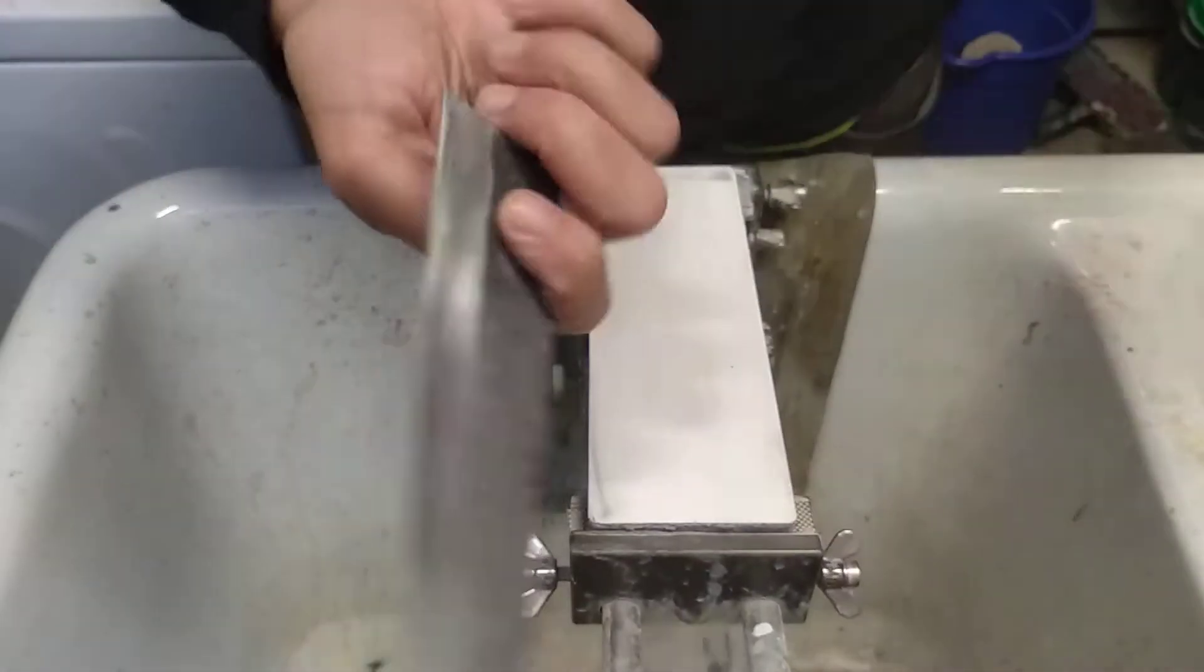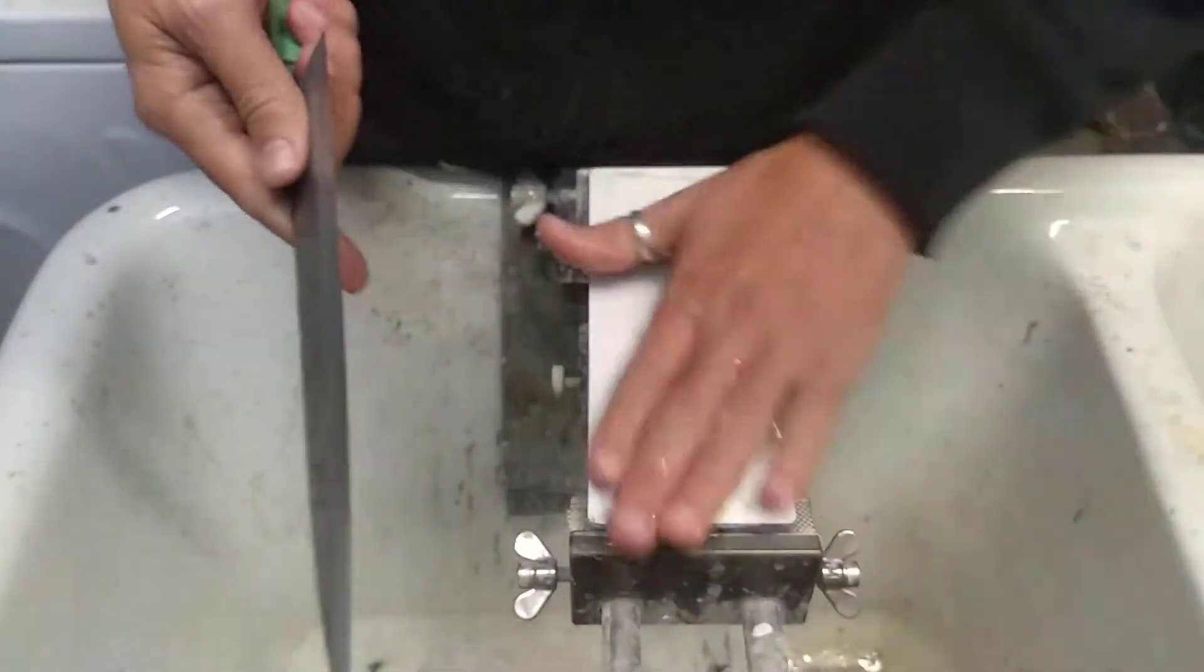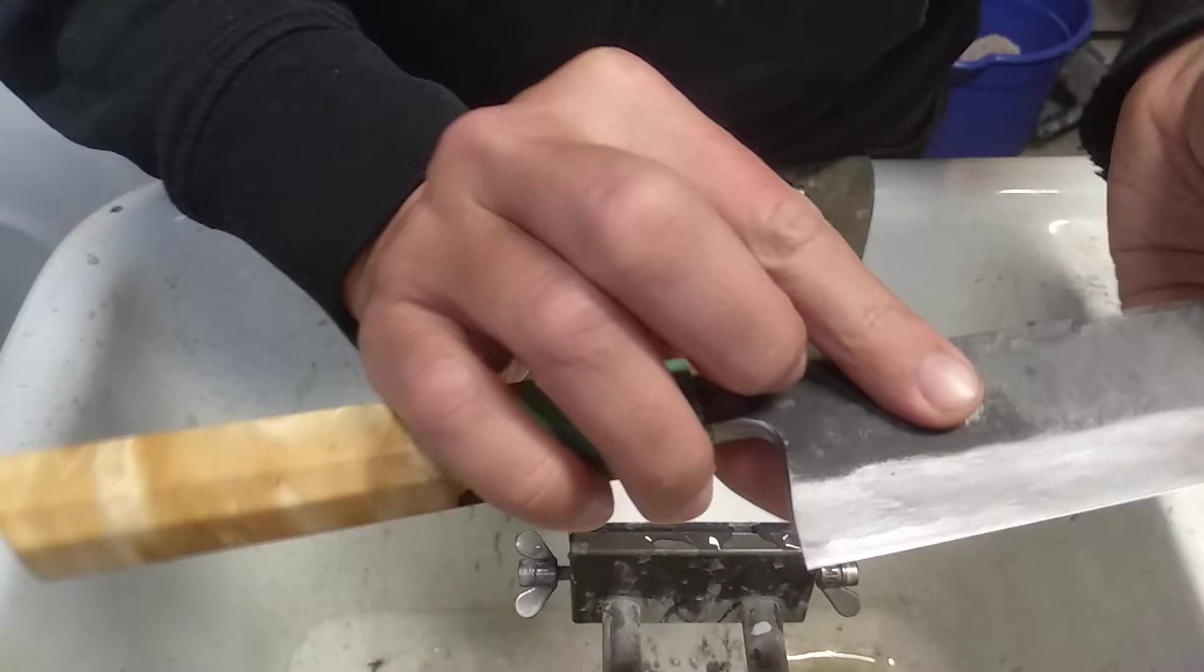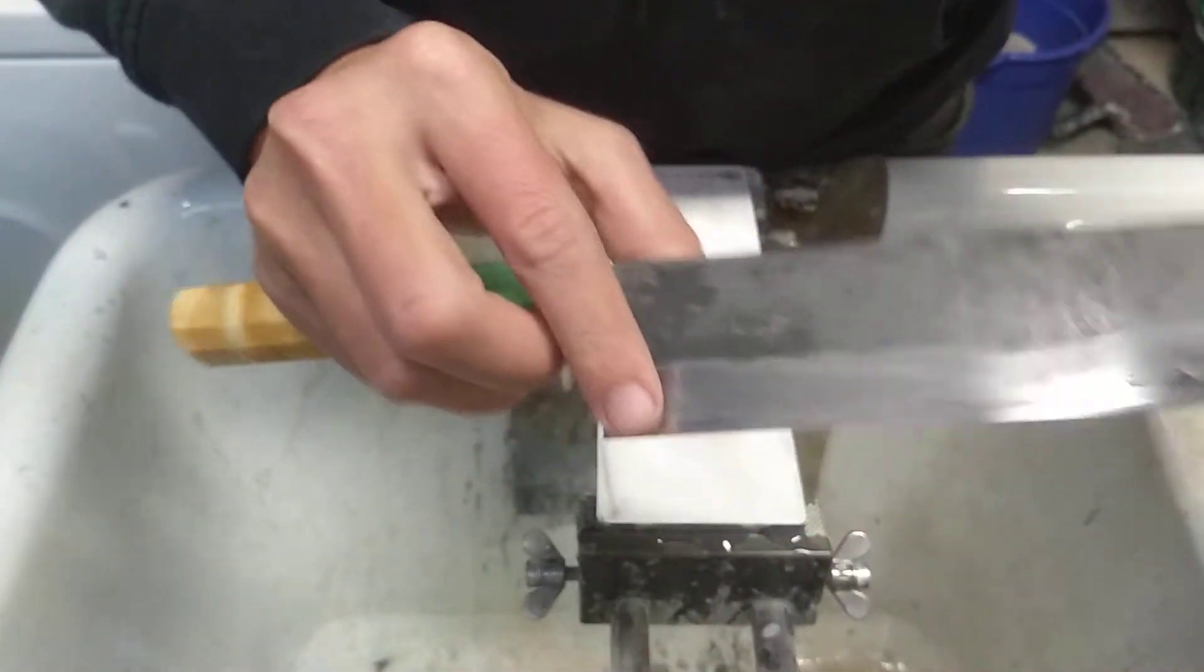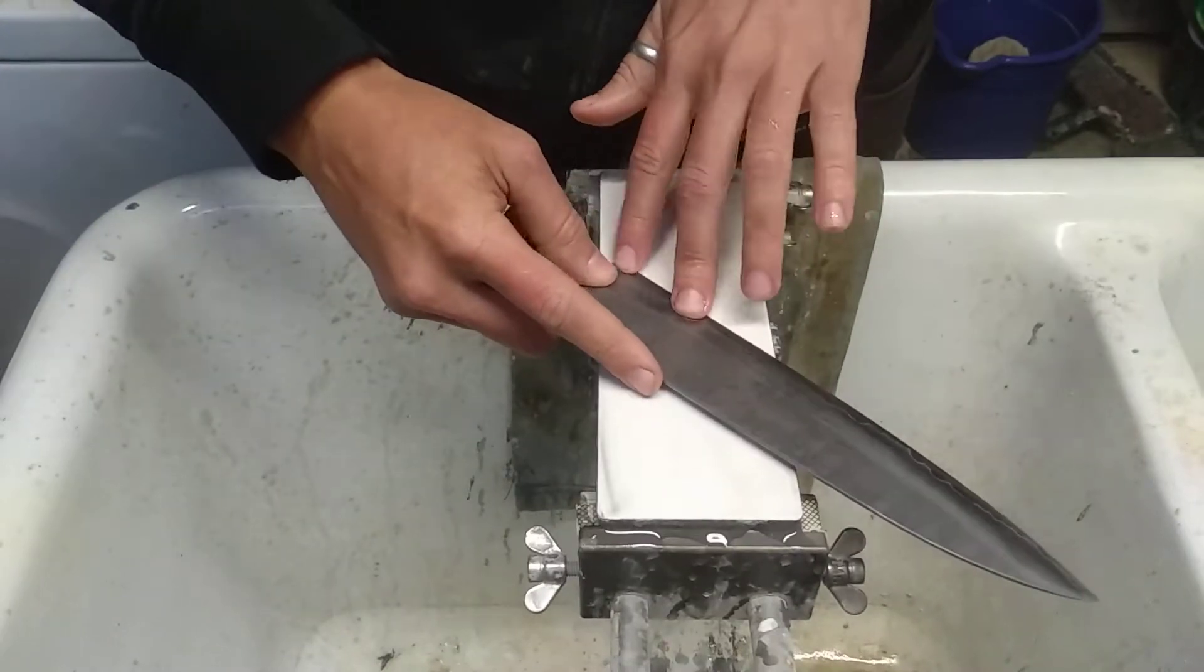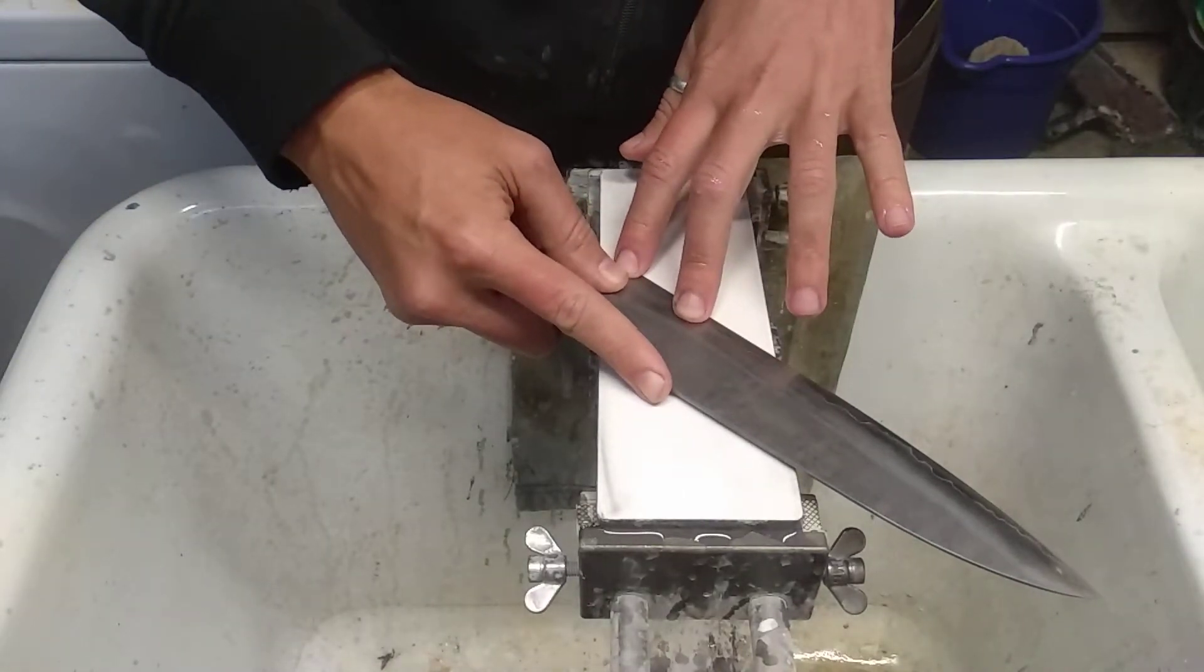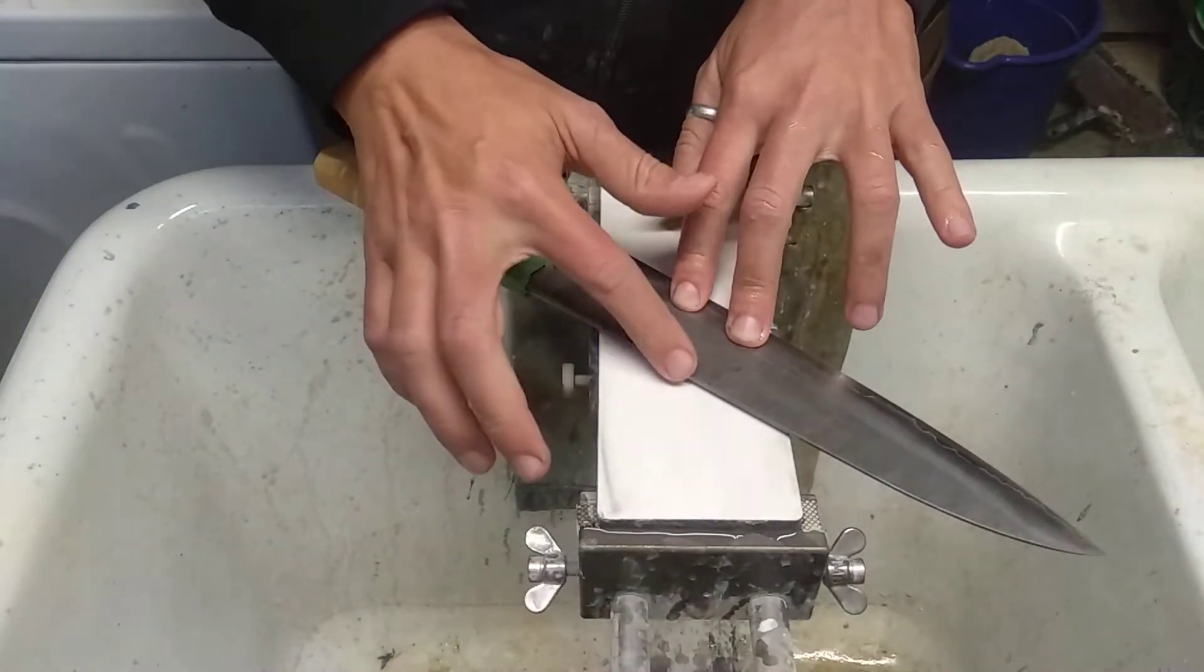So, let me show you an example. This is one knife that doesn't have much of a convexity. Well, I already put a bit on the back, but basically, put your fingers down here, and this is the angle of the bevel.